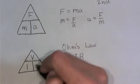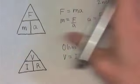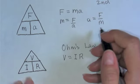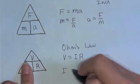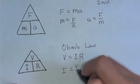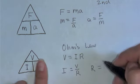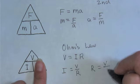and the I there, and the R there. So we get V equals I times R. We also get I equals V over R, and R equals V divided by I.